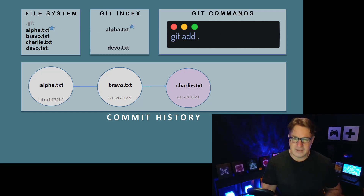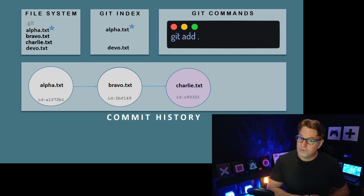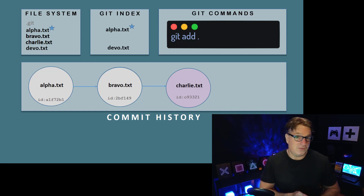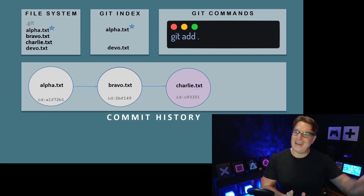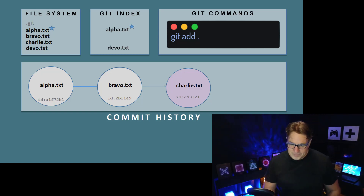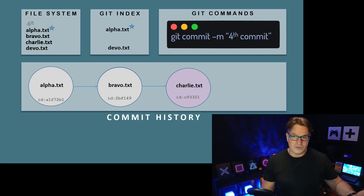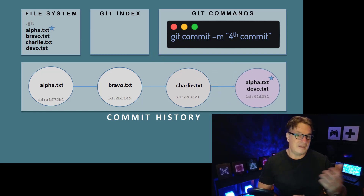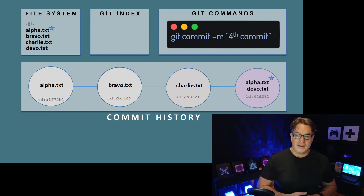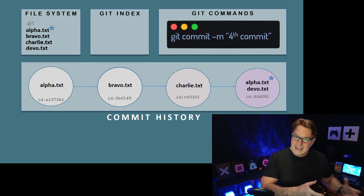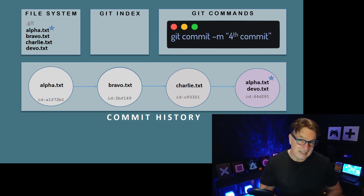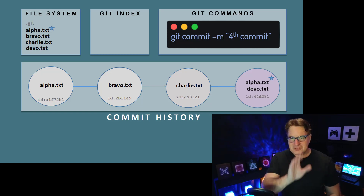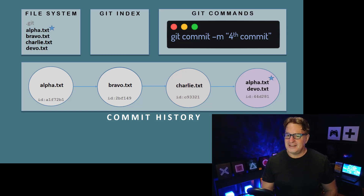In this example, alpha.txt has been updated and a new file devo.txt has been added. By running git add dot, all changed files are added to the index at once — it's a convenient shortcut. Then git commit -m 'fourth commit' commits everything. Your history of commits is dictated by what you added to the git index with the git add command.